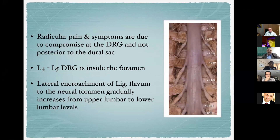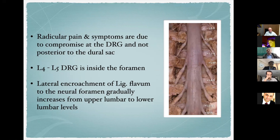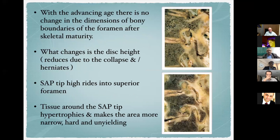Radicular pain and symptoms are mainly due to compromise of the dorsal root ganglion, not posterior compression on the dural sac. L4-L5 is the commonest level for stenosis and claudication, and the dorsal root ganglion sits inside the foramen at L4-L5, making it the most frequently compromised structure. There is lateral encroachment of the ligamentum flavum into the neural foramen that gradually increases from upper to lower lumbar levels, supporting that foraminal stenosis is equally — or sometimes more — contributory to stenotic symptoms than central stenosis.